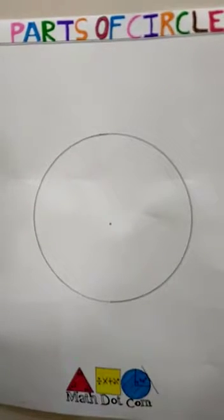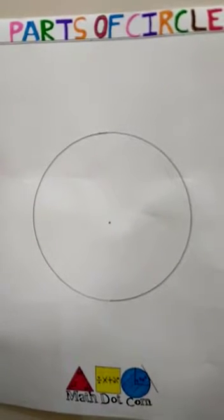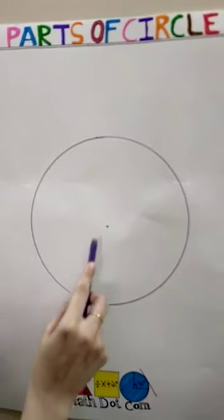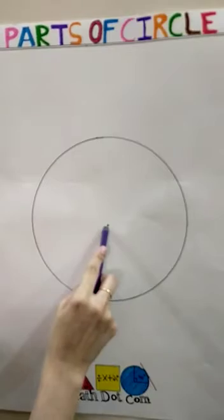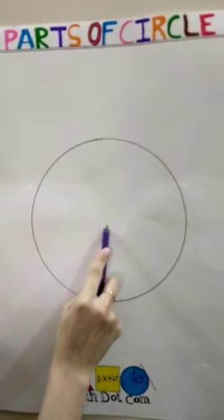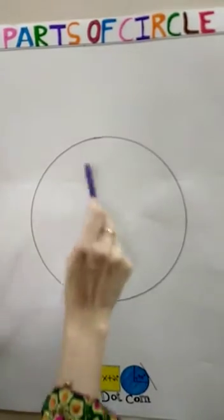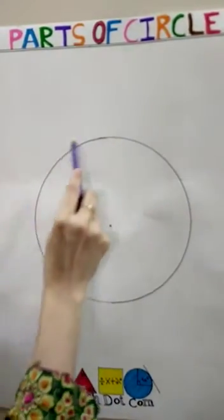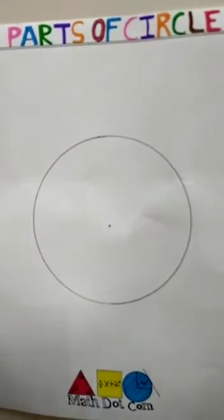Today we are going to learn the different parts of the circle. This is the center of the circle — the point that is equidistant from all points on the boundary of the circle.